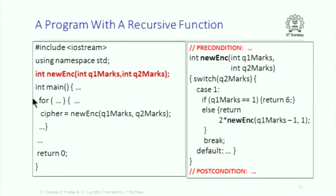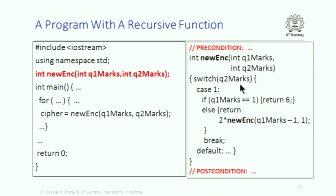So what does the encode function do? It takes integer q1 marks and integer q2 marks. The function is invoked as: cipher equal to new_encode(q1_marks, q2_marks). It has two integer parameters. Look at the switch: it switches on q2_marks. In one case, when q1_marks equals 1, it returns 6; else it returns 2 multiplied by a recursive call with q1_marks minus 1.